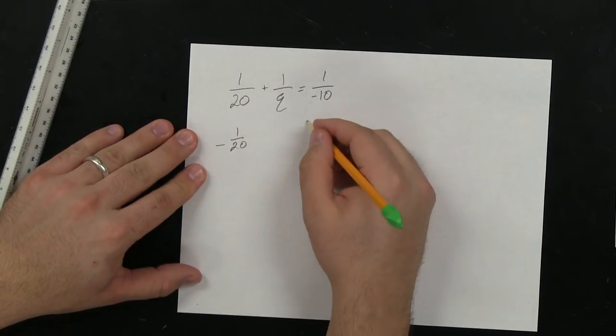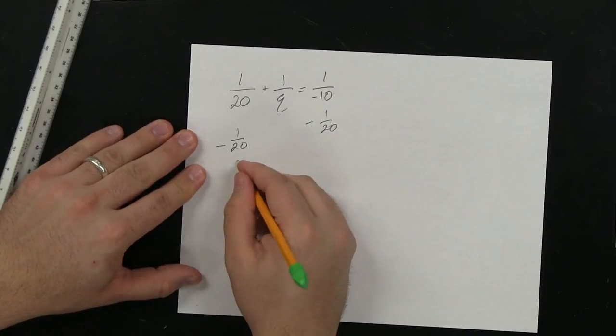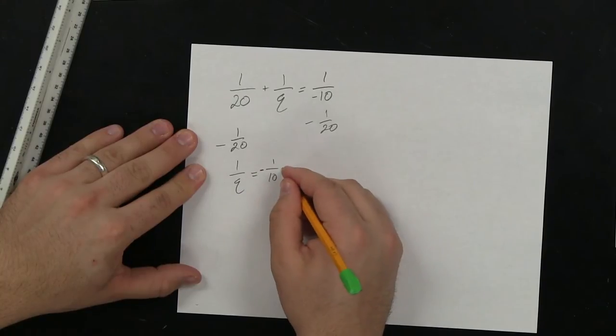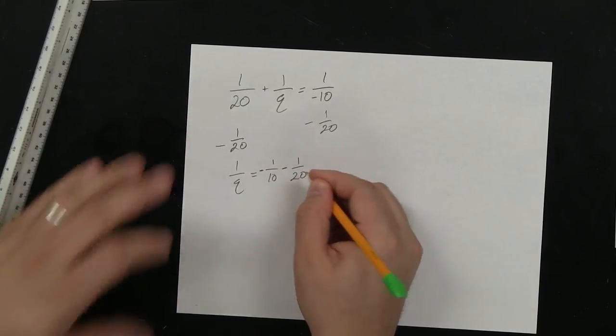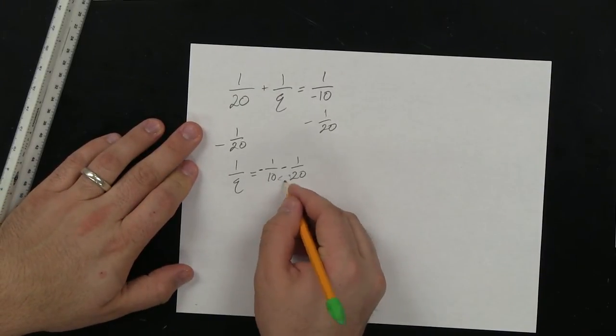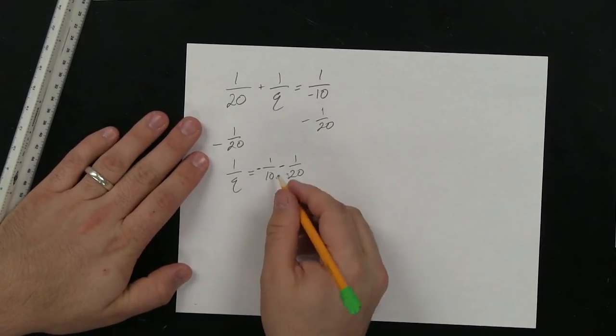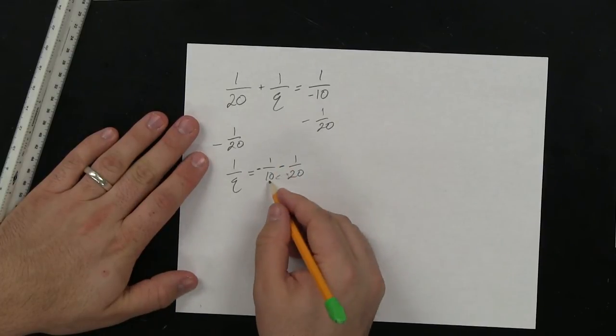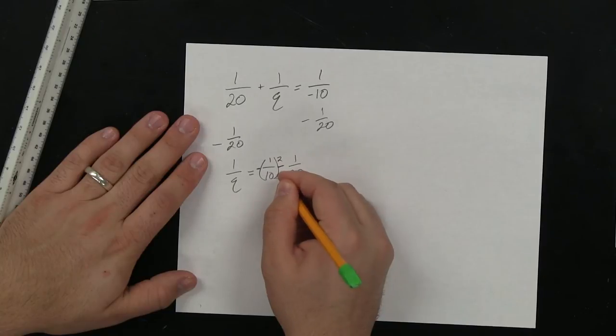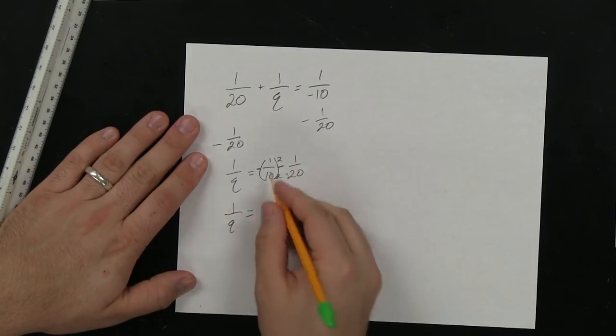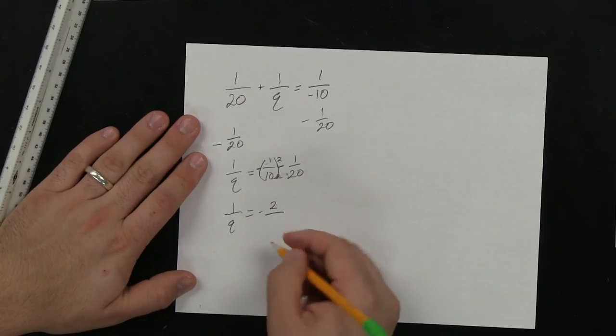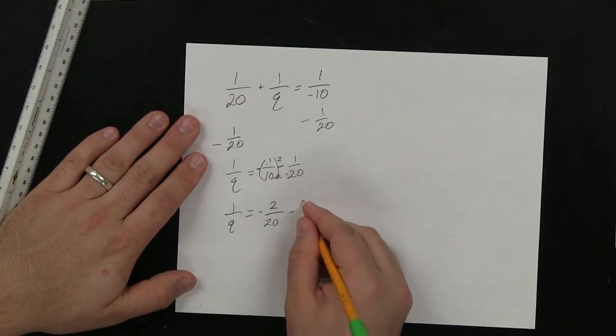It's really far below that. Minus 1 over 20. 1 over Q equals 1 over 10, negative, minus 1 over 20. Now the astute observer will know that this looks very similar to the first one that we did here a couple times ago. So the least common denominator is 20. That means we need to multiply this whole side by 2 over 2. So 1 over Q equals 2 times 1, which is negative. Over 2 times 10, which is 20. Minus 1 over 20.